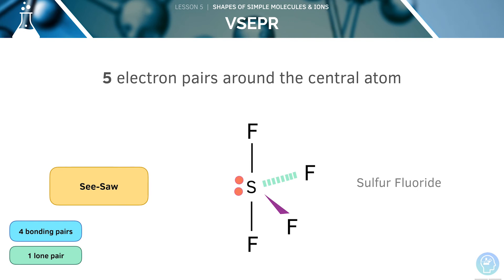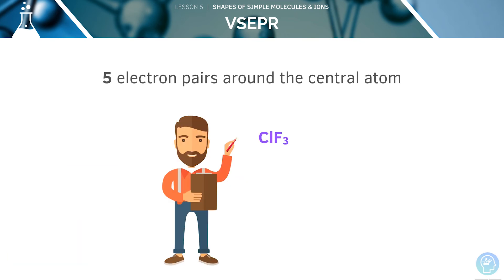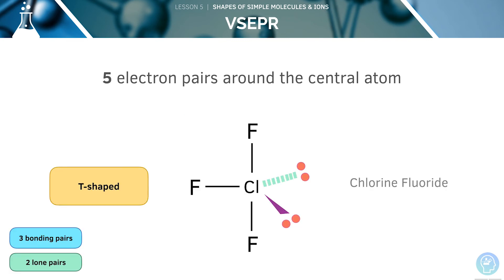In reality, the electrons are much closer to the central atom for reasons we described earlier in this tutorial. Now we'll look at chlorine fluoride. Chlorine has seven outer electrons and is forming three covalent bonds, so it has two lone pairs and three bonding pairs. The electrons will repel strongly, forcing the bond pairs CF and ClF closer together. This shape is called T-shaped. The bond angle is 88 degrees, due to the repulsion from the lone pairs.